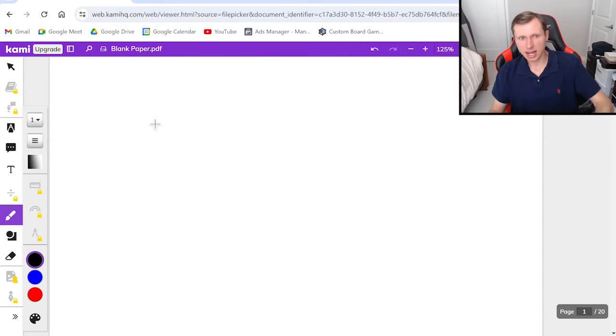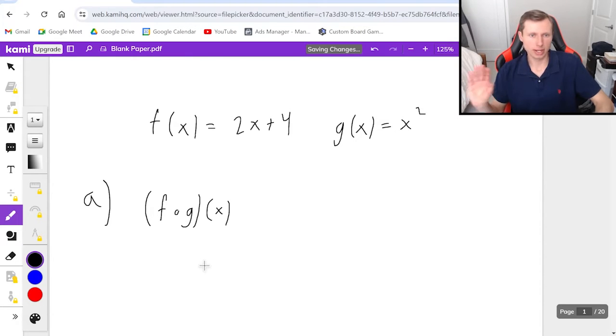As an example, let's say I have f(x) = 2x + 4 and g(x) = x². For part a, I want you to find f of g of x, and for part b we'll find g of f of x. Focusing on part a right now, what do we do?